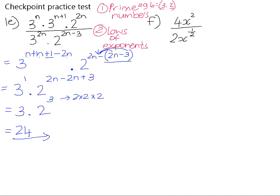In number f, the bases on the exponents are variable, so we don't need to worry about changing it to prime numbers. So the coefficients 4 divided by 2 is 2 over 1, or just 2. The base is x, and it will be 2 minus 1 half. 2 minus 1 half is 1 and 1 half, which is 3 over 2. And if we write that in surd form, it will be 2 square root x cubed.